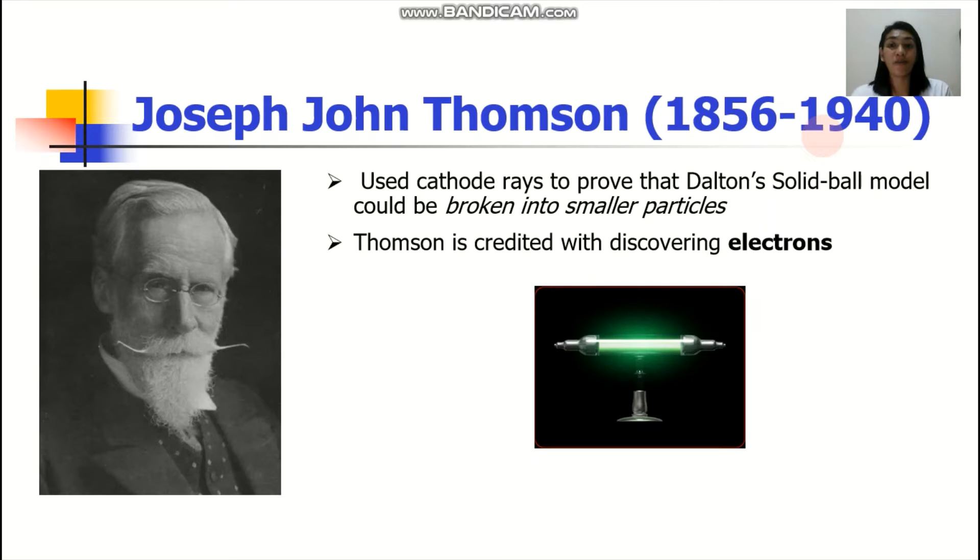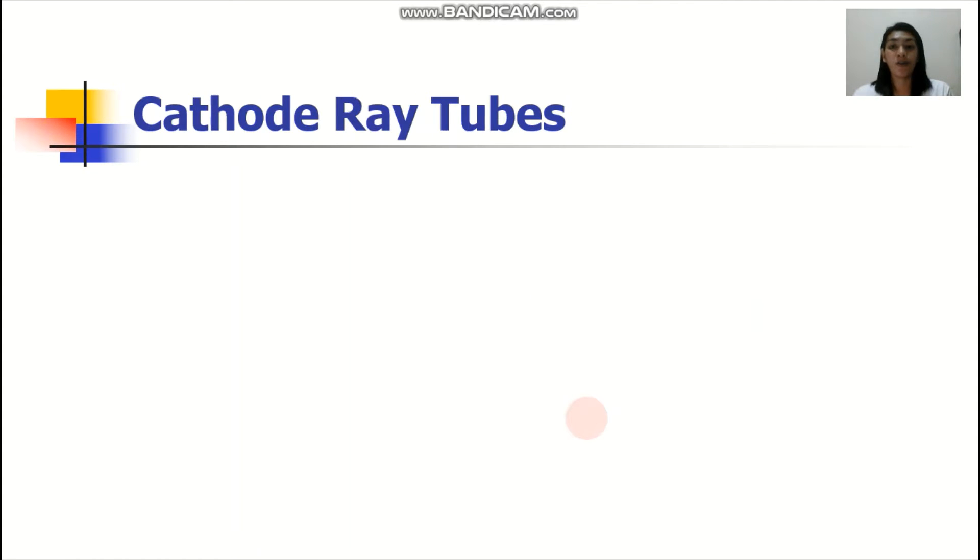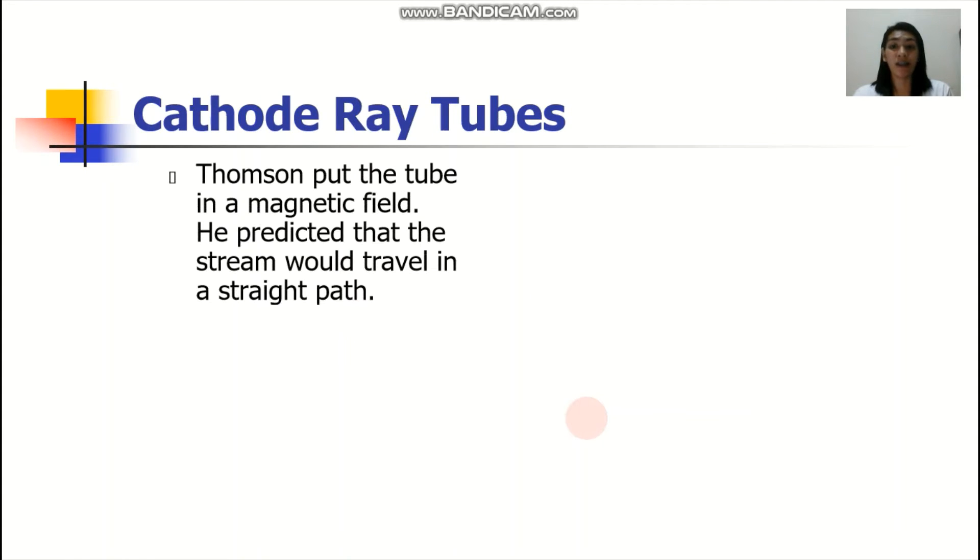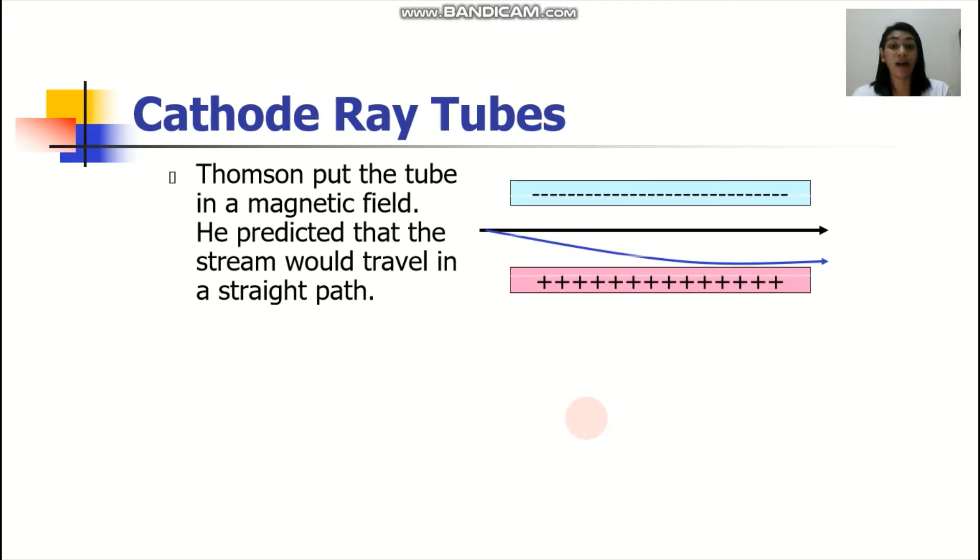Next, we have Joseph John Thompson, or commonly known as J.J. Thompson. He used cathode rays to prove that Dalton's solid bond model could be broken into smaller particles. His setup is actually this cathode ray tube, and he was later on credited with discovering electrons. In his experiment, he actually put a tube in a magnetic field, and he predicted that the stream would actually travel in a straight path.